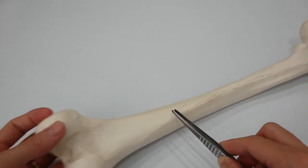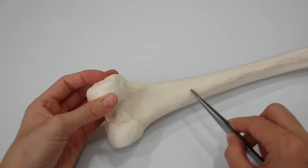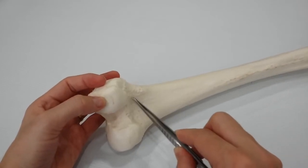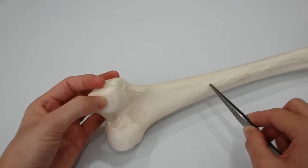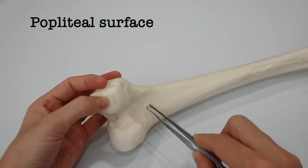The shaft becomes broader downward toward the distal end and forms a flat triangular area on its posterior surface called the popliteal surface.